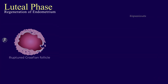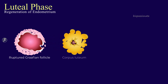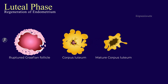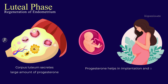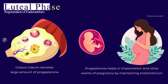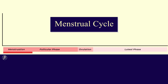Luteal phase — regeneration of the endometrium. During the luteal phase, the remaining part of the Graafian follicle is transformed into the corpus luteum, which then degenerates in the form of corpus albicans. The corpus luteum secretes a large amount of progesterone, which is essential for the maintenance of the endometrium. Such an endometrium is necessary for the implantation of the fertilized ovum and other events of pregnancy. Now let's check the graphical representation of hormonal regulation of the menstrual cycle.